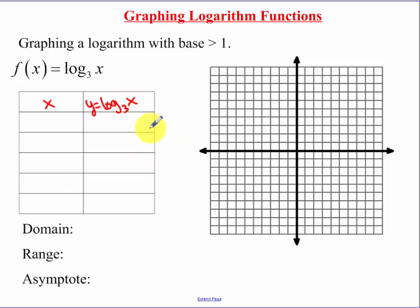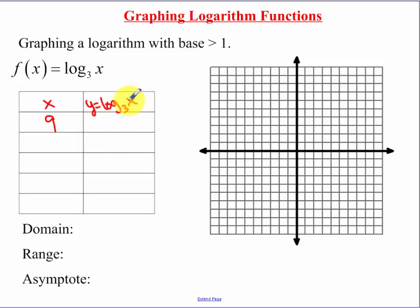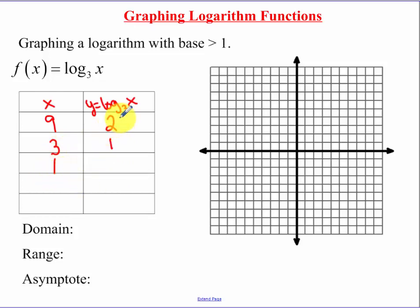What you want to be picking for x is powers of 3. One power of 3 is 9. When you plug in that for x, 3 to what power gets me 9? That's going to be the second power. You could pick 3 — 3 to what power gets me back 3? That's the first. Plug in 1 — 3 to what power gets me back 1? That's going to be 0.